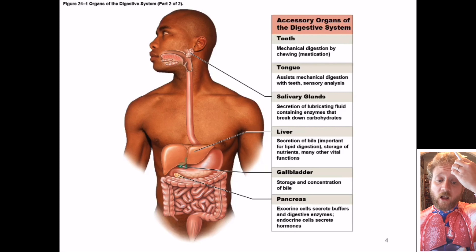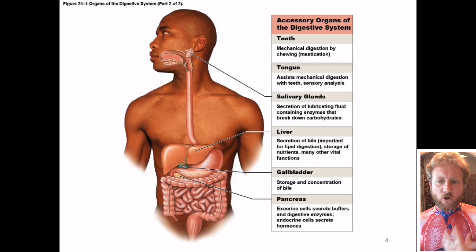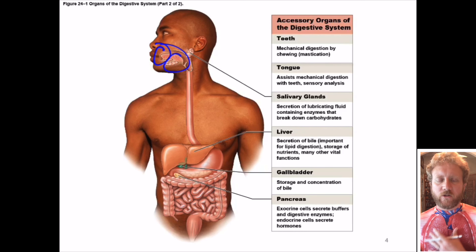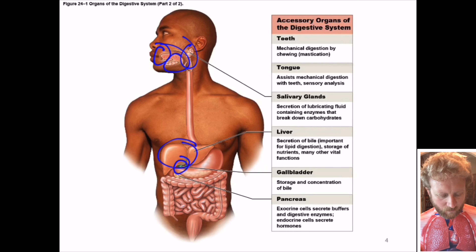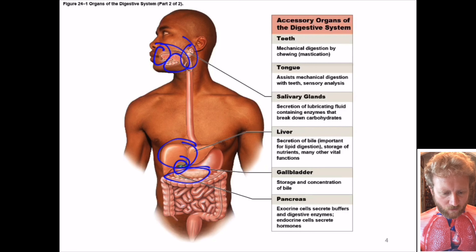The other part is the accessory organs. These are all organs that are vital to the function of the digestive system, but they're not directly involved with the primary function and most don't come in direct contact with the food. Things like your teeth, the tongue — which is also used as part of the respiratory tract — your salivary glands, liver, gallbladder, and pancreas are all vital but don't come in direct contact. They also have other functions as well. That's why we call those accessory organs.